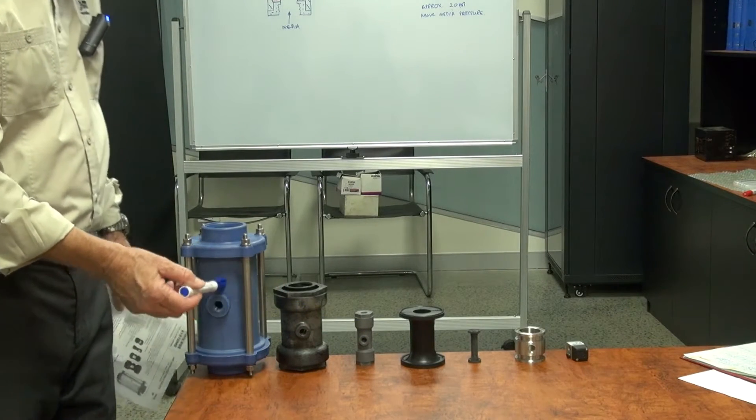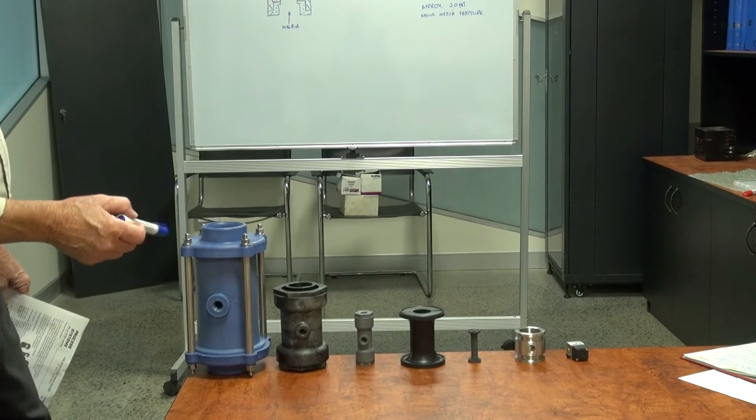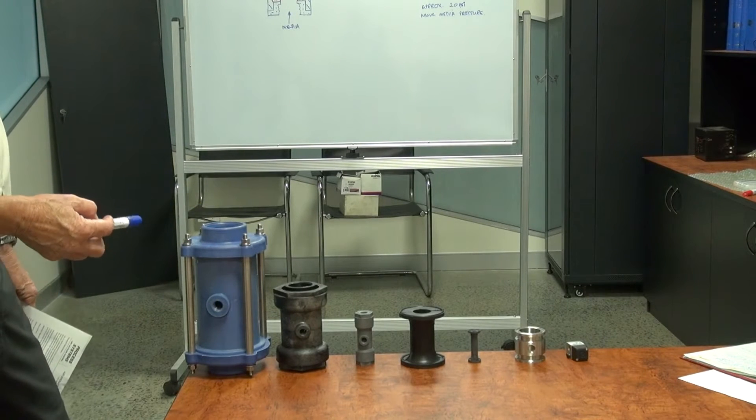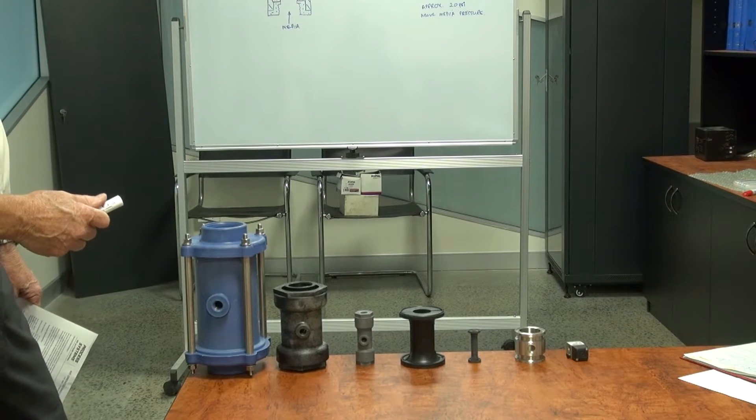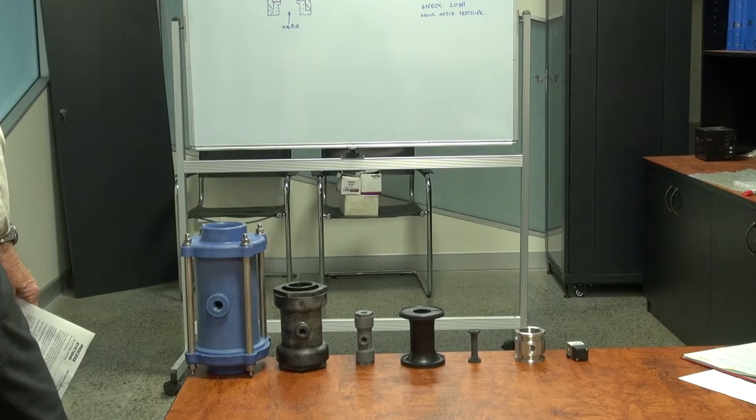These are plastic bodied valves with a sleeve designed for slurries, powders, granules, anything that would block a ball valve or butterfly valve and is difficult to seal.